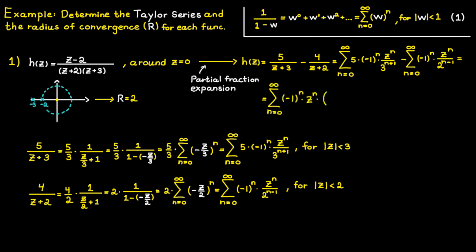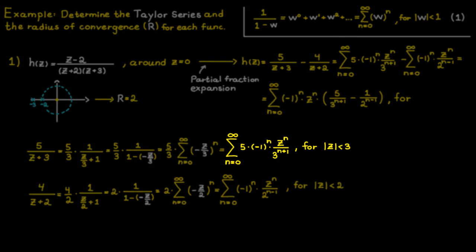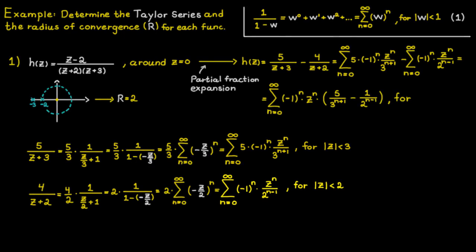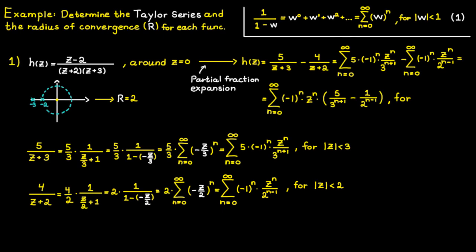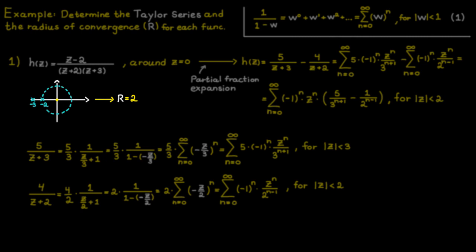In what region will the combined series be valid? The first series is valid if the absolute value of c is less than three, but the second is only valid if the absolute value of c is less than two. Therefore the end result will be valid in the smaller of the two regions, since in that region both power series are valid. This simply corresponds to our earlier findings when we made the plot. Thanks for watching.